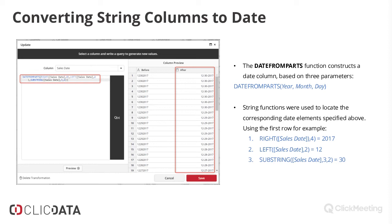What we need to do is combine the DATEFROMPARTS function with string functions. Specifically, RIGHT, LEFT, and SUBSTRING are used to extract each element. The RIGHT function extracts a certain number of characters from the right side of the string — since the year element is at the very end, we extract four characters from the right, which yields 2017. The LEFT function is the opposite, extracting characters from the left side — since months come first, we take the first two characters to get the month, which would be 12.